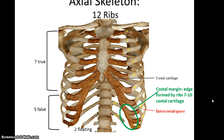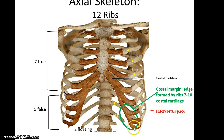There are 12 ribs on each side, giving us a total of 24 ribs. The first 7 ribs are true ribs because their costal cartilage attaches directly to the sternum. The remaining 5 ribs — 8 through 12 — are false ribs because they do not attach directly to the sternum. The last 2 ribs are also known as floating ribs because they don't have any costal cartilage at all. The costal margin is the edge of the costal cartilage formed by the first three false ribs (8, 9, 10), and the space between ribs is referred to as intercostal space.